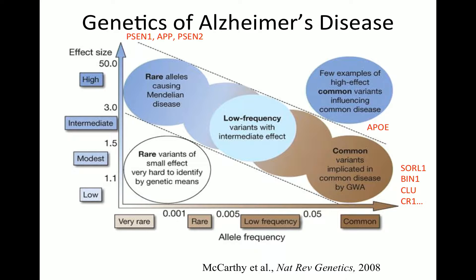What we have in the middle — a real gift to Alzheimer's disease research, not true of most complex disorders — is the gene APOE, which falls between those two extremes. APOE is pretty common: about 10% of people will have one copy, yet it has a very strong effect size on Alzheimer's disease. Not as large as presenilin-1, but far stronger than the other common polymorphisms. We're going to talk a fair bit about APOE.